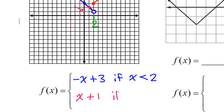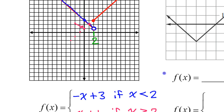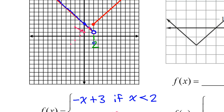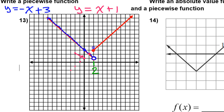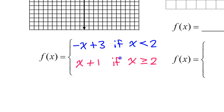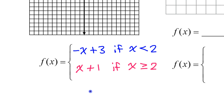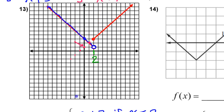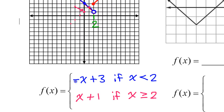Now the domain restriction: if x is greater than or equal to two. Again, I'm dealing with an x value of two, and this piece of the function is going to the right, so the x values have to be greater than two. The endpoint here was a closed circle, indicating greater than or equal to two. So that's it for problem number 13.